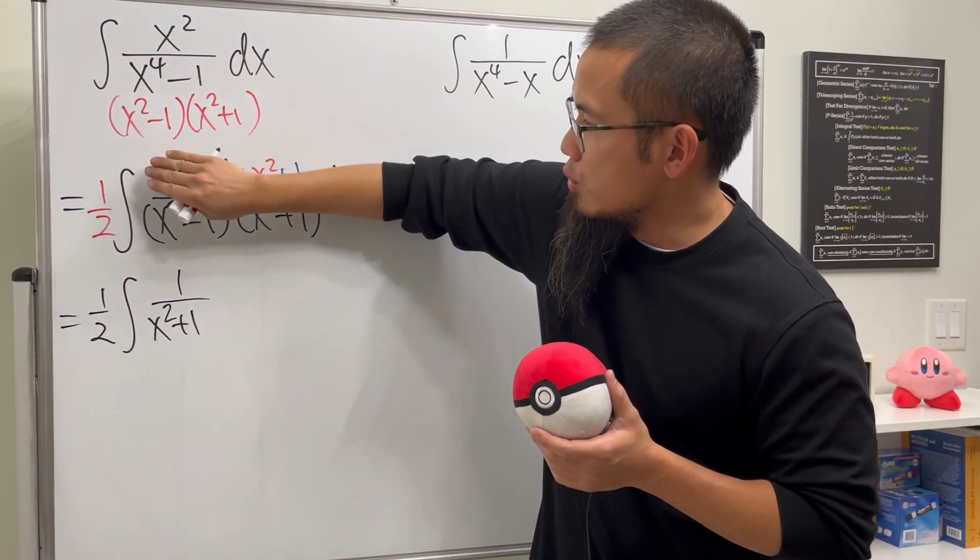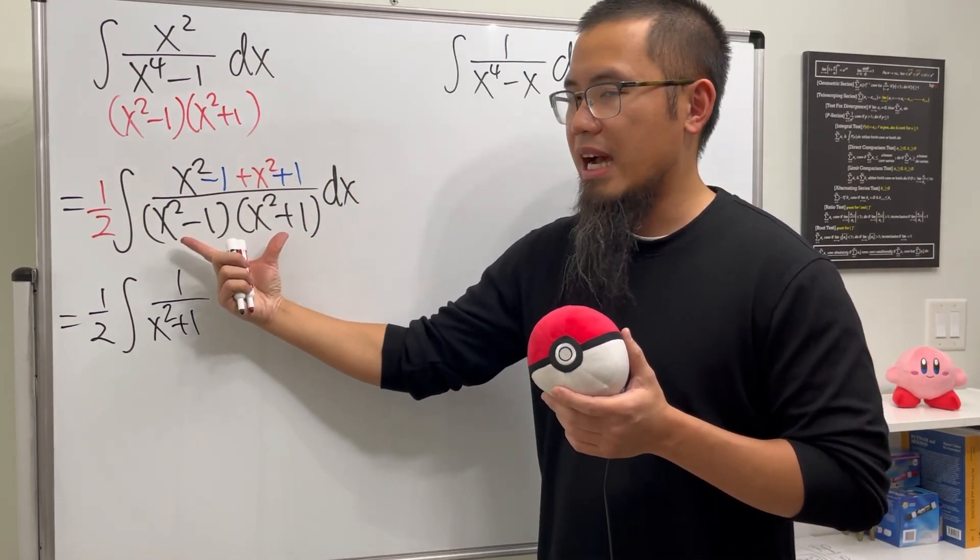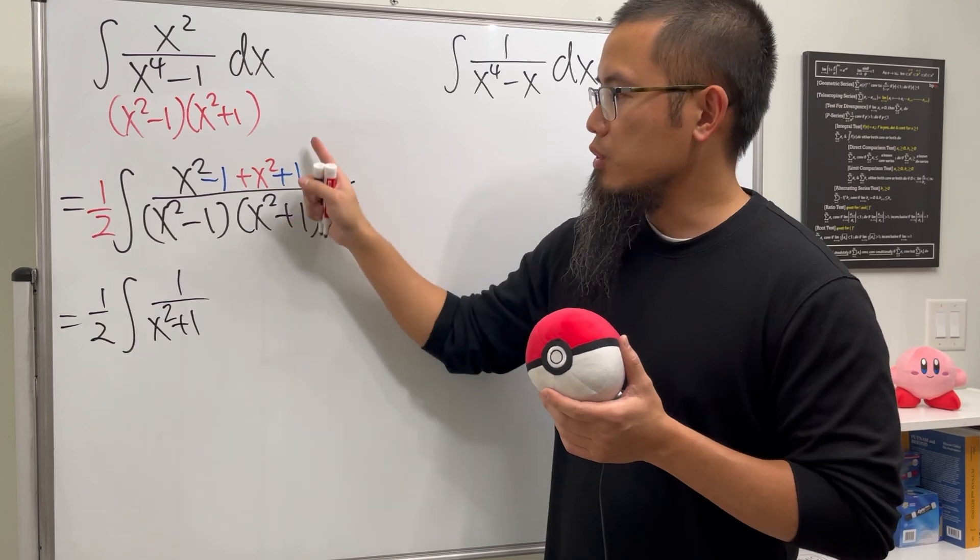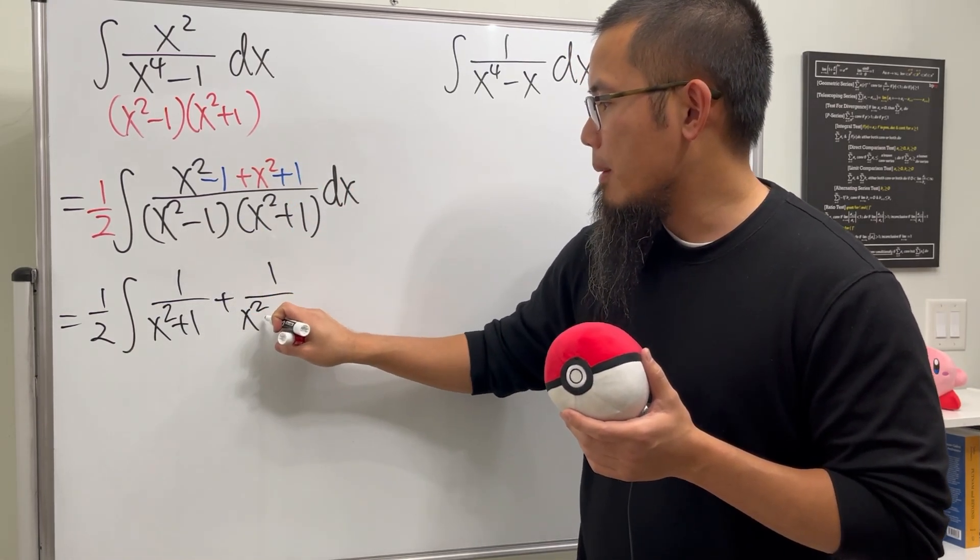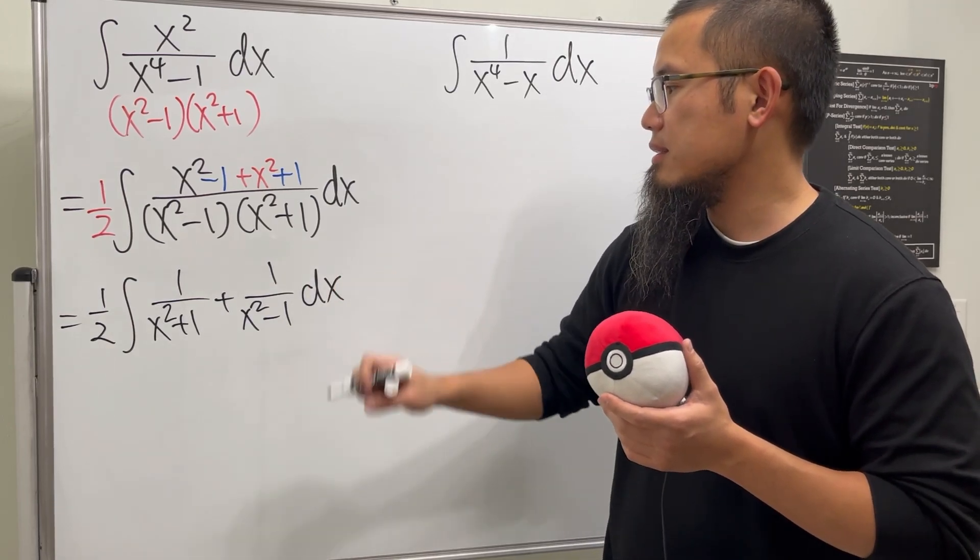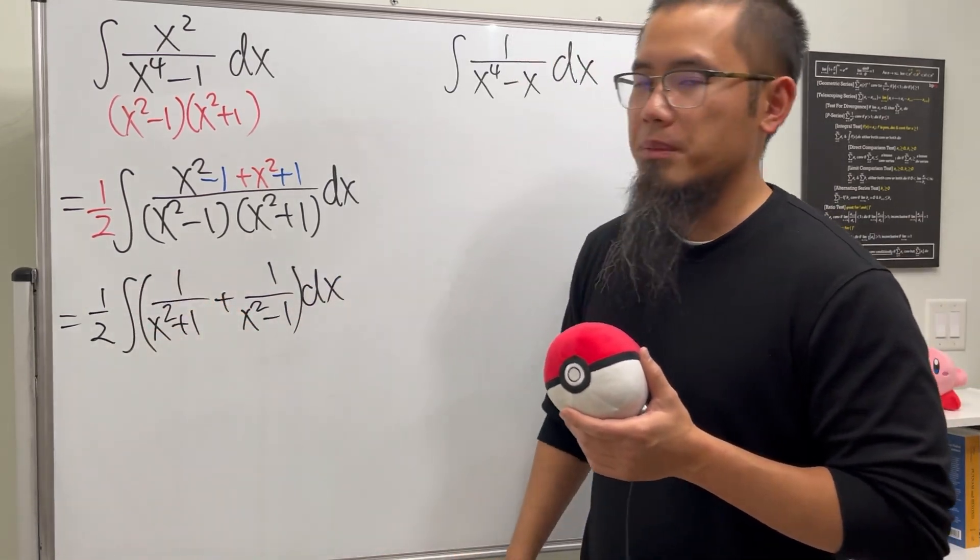Secondly, we ignore this first two parts, and we have this over that. This and that cancel. So we just have 1 over that. So, plus 1 over x² - 1, and then dx. Put a parenthesis. People like me to do that.